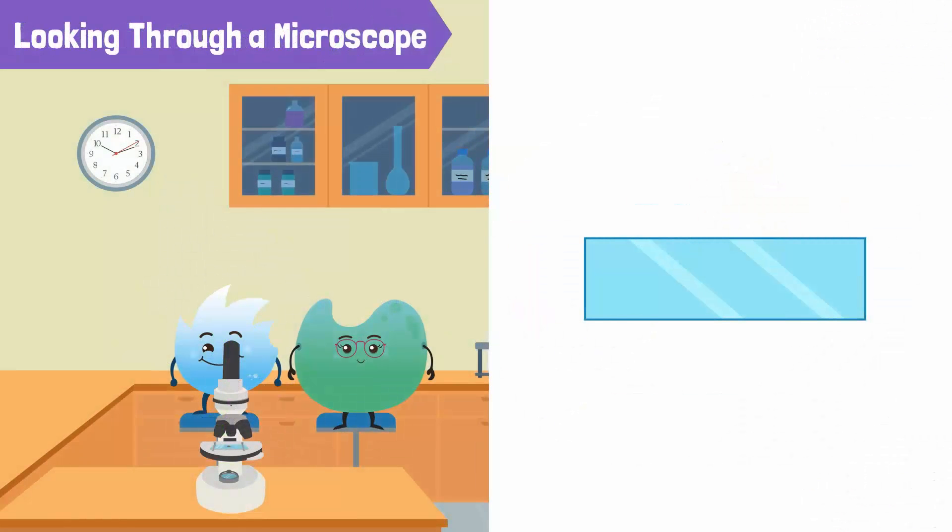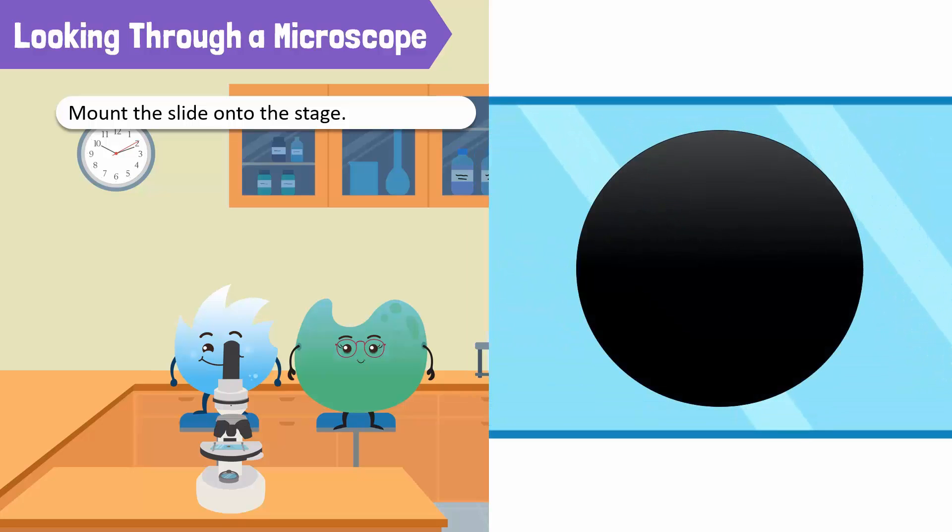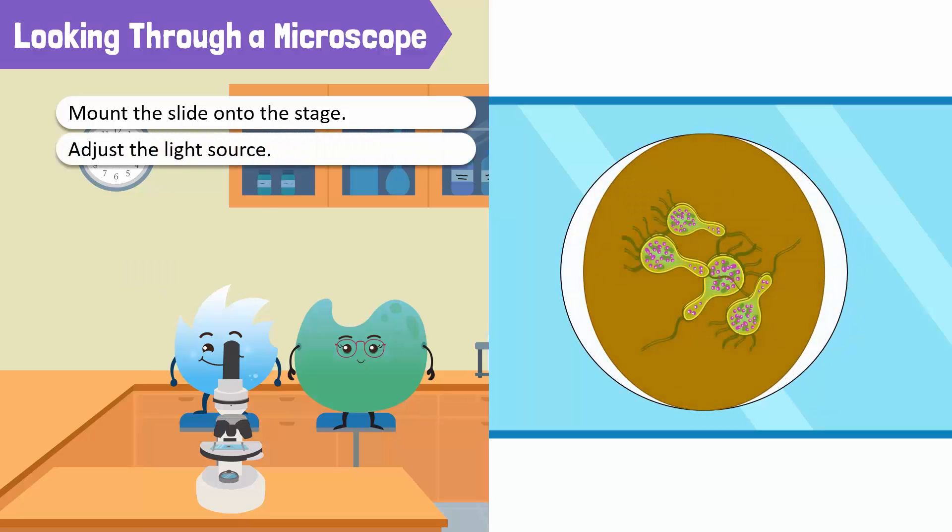Now, put some dirt from your hand on a glass slide and mount it onto the stage of the microscope. Now, look through the eyepiece. What do you see? It's dark. Adjust the light source. I can see something now, but it's very blurry.